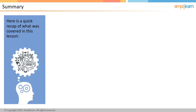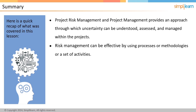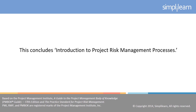Here is a quick recap of what was covered in this lesson. Project risk management and project management provide an approach through which uncertainty can be understood, assessed, and managed within projects. Risk management can be made effective by using processes, methodologies, or a set of activities. Project risk management has six processes: plan risk management, identify risks, perform qualitative risk analysis, perform quantitative risk analysis, plan risk responses, and control risks. This concludes the introduction to project risk management processes. The next lesson covers plan risk management.